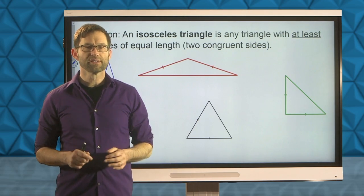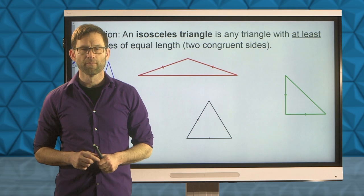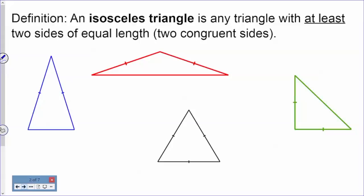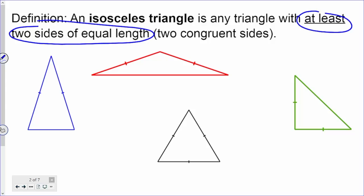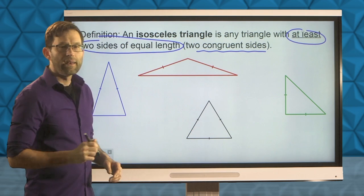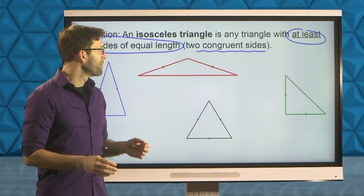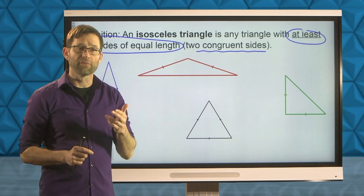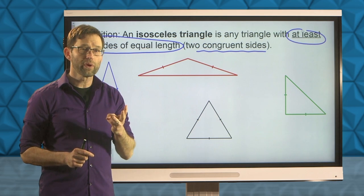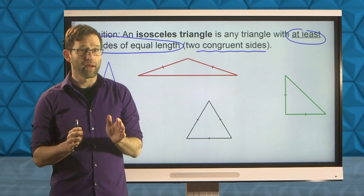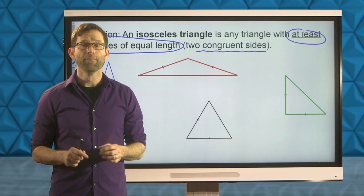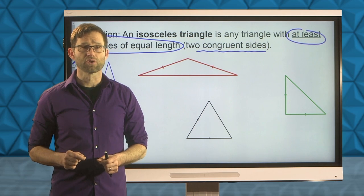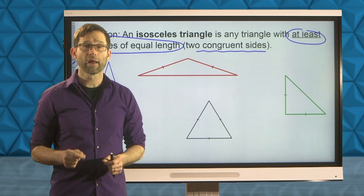The definition of an isosceles triangle might come as a little bit of a surprise. An isosceles triangle is any triangle with at least two sides of equal length — two congruent sides. The term 'at least' is important: isosceles triangles could have two sides of equal length or three sides of equal length. When they have three sides of equal length, we have an equilateral triangle, but every important property of isosceles triangles is also a property of equilateral triangles.